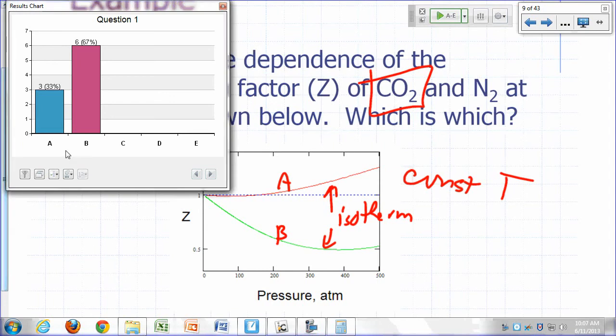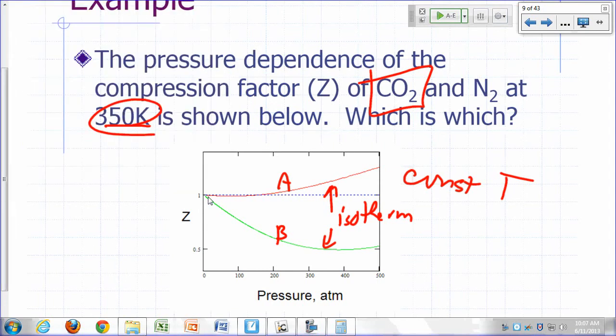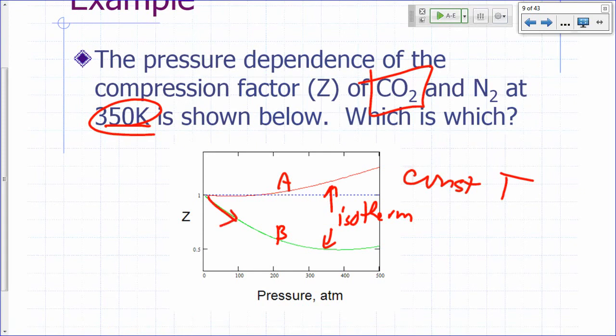Okay. So, the correct answer is B. Why B? Well, what does a dip below 1 mean? When Z dips below 1, what does it mean?